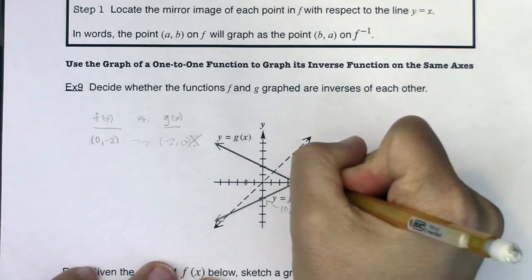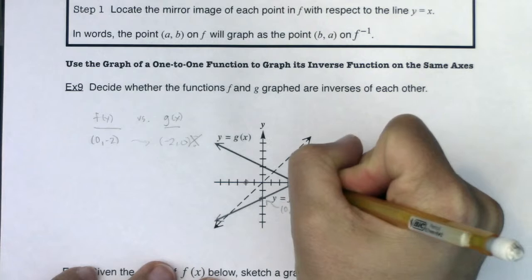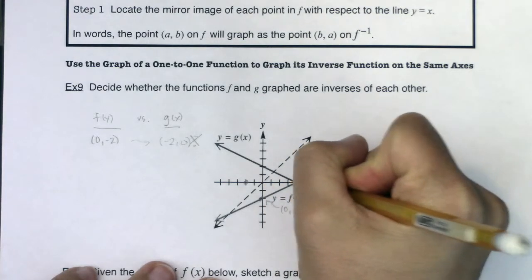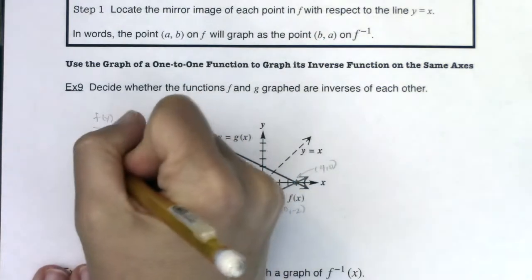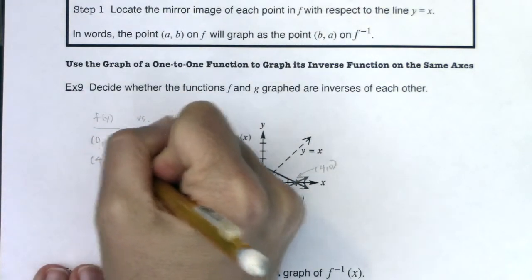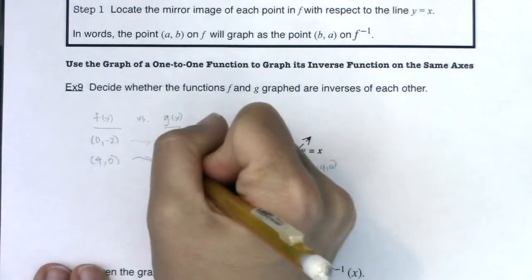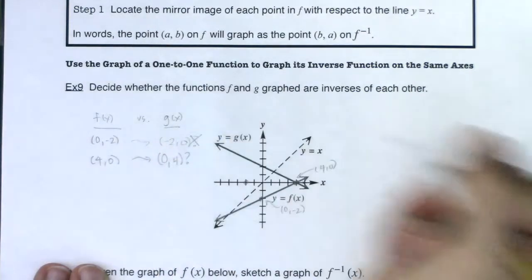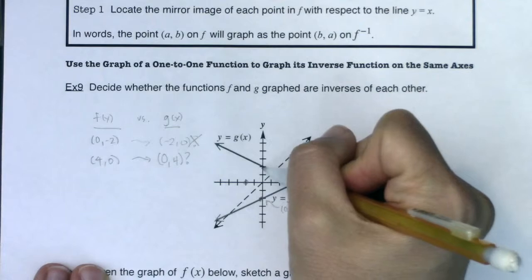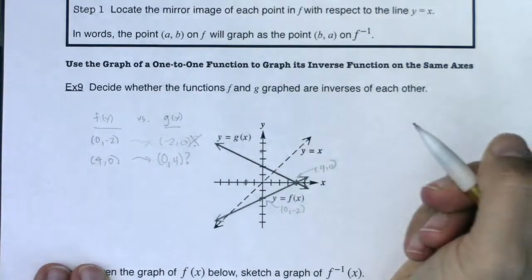If I wanted to try this ordered pair, so let's take a look. This is on both f of x and g of x. This is the ordered pair, what, 4, 0? All right, so I know 4, 0 is on f of x. Well, if these were inverses of one another, then 0, 4 should be on g of x. Is 0, 4 on g of x? It is not, all right?